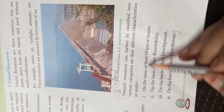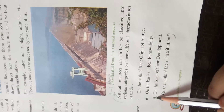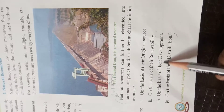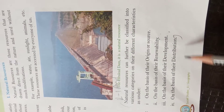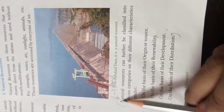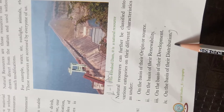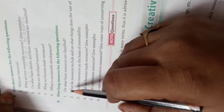The classifications are: number one, on the basis of their original source; number two, on the basis of their renewability; number three, on the basis of their development; number four, on the basis of their distribution. Start from 'natural resources' and end at 'distribution'.